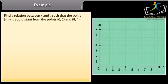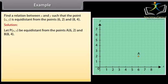Find a relation between x and y such that the point xy is equidistant from the points 6, 2 and 8, 4. Solution. Let p xy be equidistant from the points a, 6, 2 and b, 8, 4. According to question, ap is equal to bp, so ap square is equal to bp square.